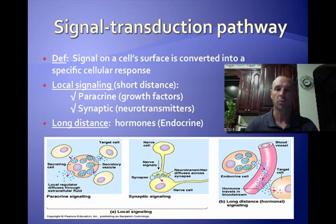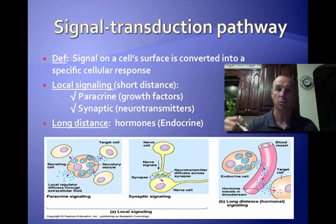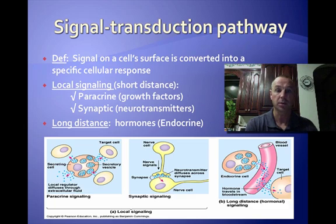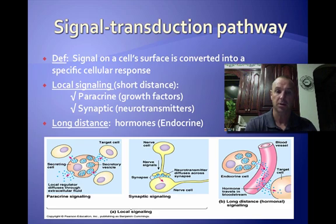So there are basically two types of signals. There's local signals, which are short distances, like in the paracrine system — a paracrine signal — such as growth factors, or by the synaptic system, which would be like neurotransmitters.